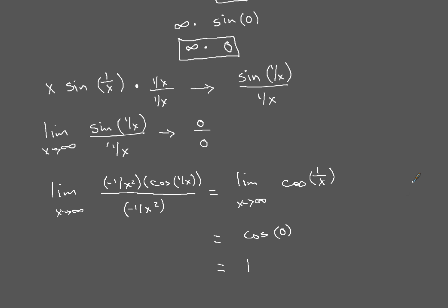So the limit of this particular function as x goes to infinity of x times sine of 1 over x — that whole limit just boils down to 1. That's the end of this example. Stay tuned and be sure to watch another example for L'Hôpital's Rule.